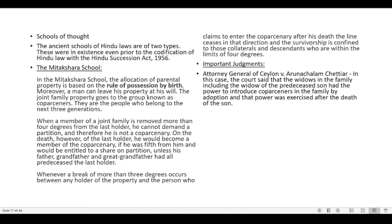Mitakshara School: The allocation of parental property is based on the rule of possession by birth. The joint family property goes to the group known as coparceners — those who belong to the next three generations. When a member of a joint family is more than four degrees removed from the last holder, he cannot demand partition and is not a coparcener. In Attorney General of Ceylon v. Arunachalam Chettiar, the court held that widows in the family had the power to introduce coparceners by adoption, and that power was exercised after the death of the son.